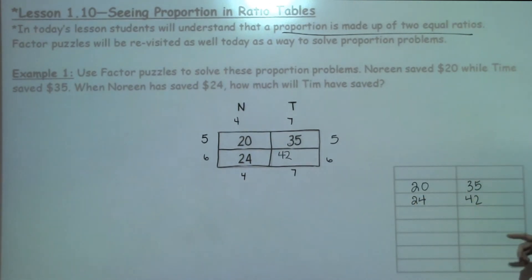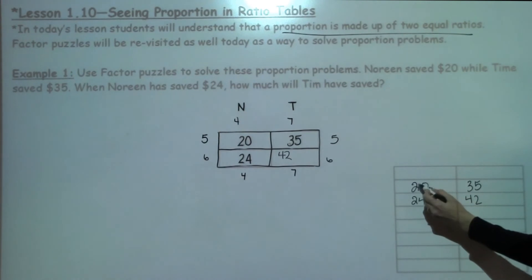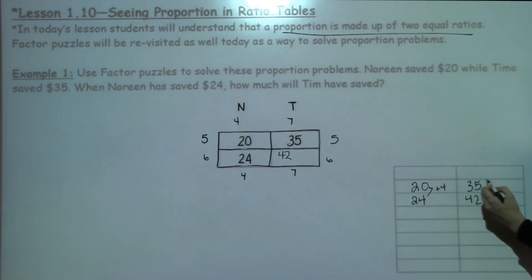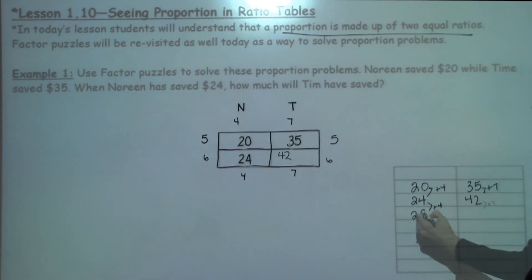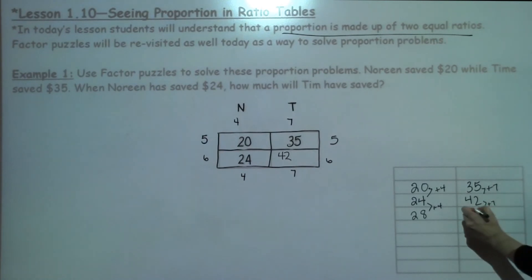I need to look for a pattern between these two numbers or how they're related. I can see that from 20 to 24, we're adding $4. I'm looking at this 35 to 42 and I'm adding $7. So if I look at this one, if I add 4 more, I would have 28. And then when I take 42 plus 7, I get 49.